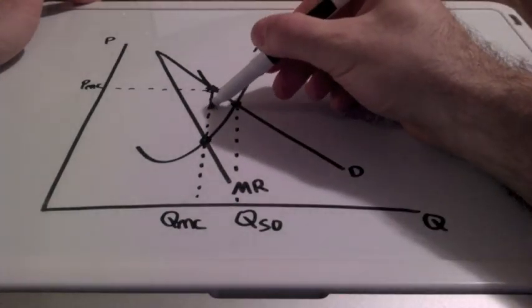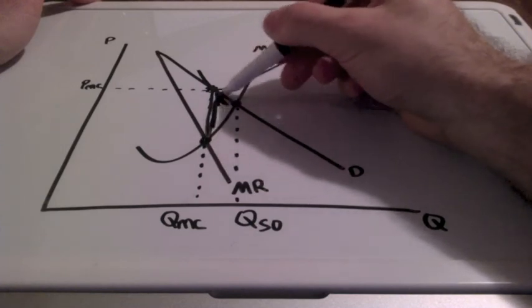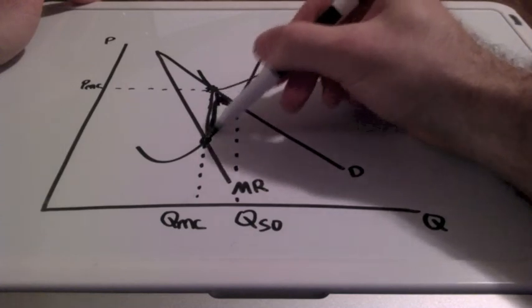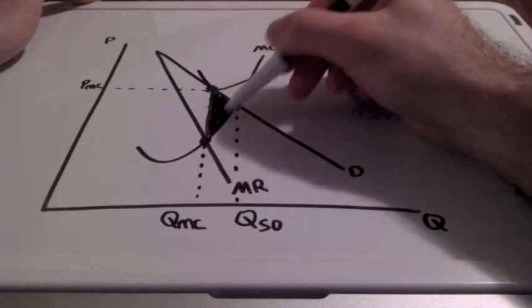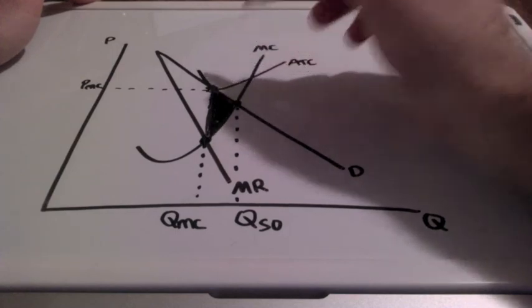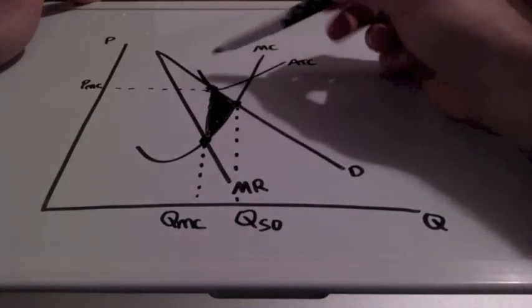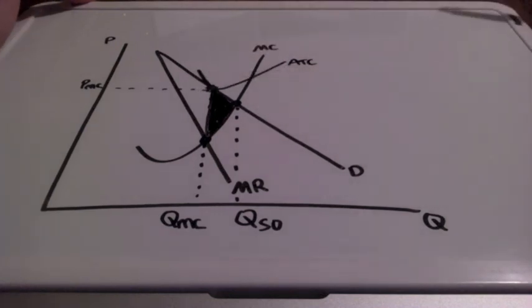And because the firm is not producing at the socially optimal level, we have deadweight loss. This entire area here represents deadweight loss for the long run monopolistic competitive firm. So we have this tangency point. This represents, once again, normal profits or a break even point for the long run equilibrium monopolistically competitive firm.